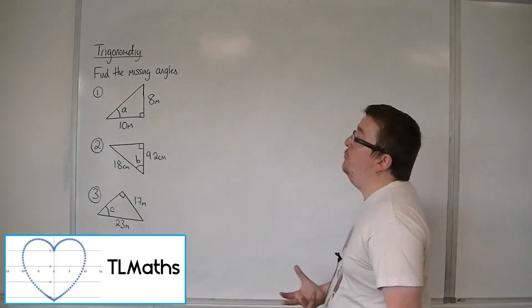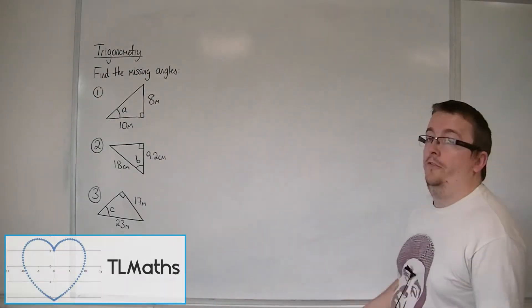OK, so here are three right-angled triangles, and I want to find the missing angles.